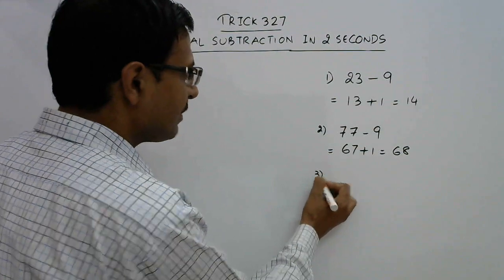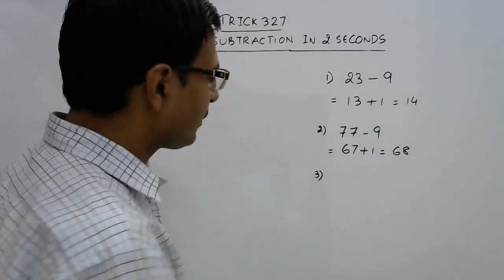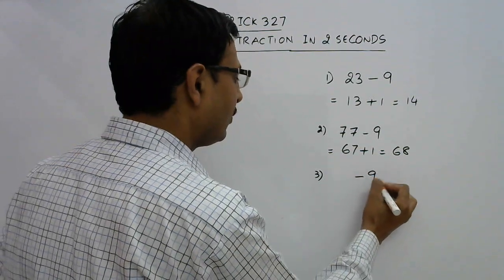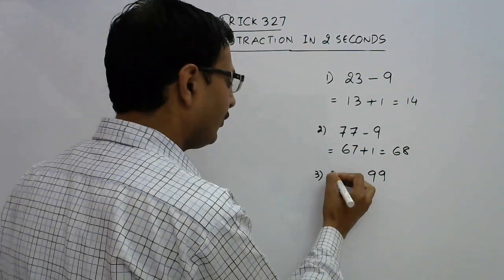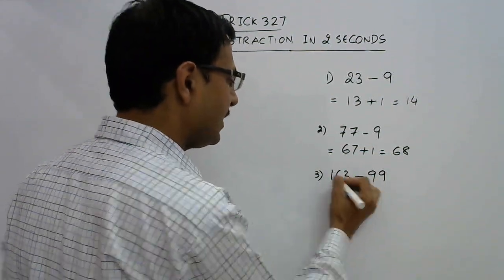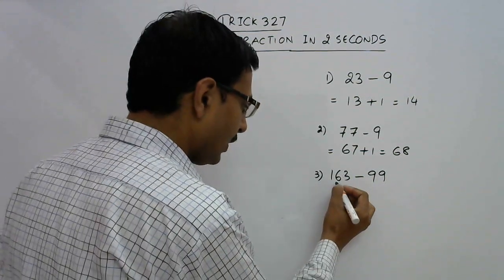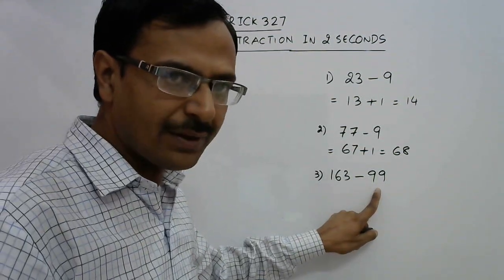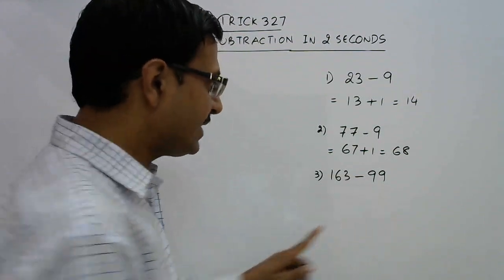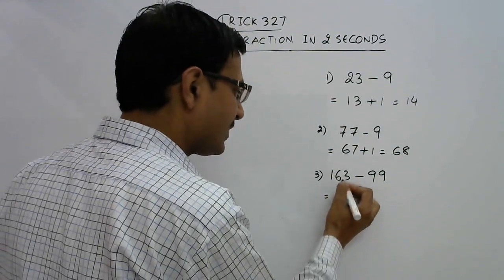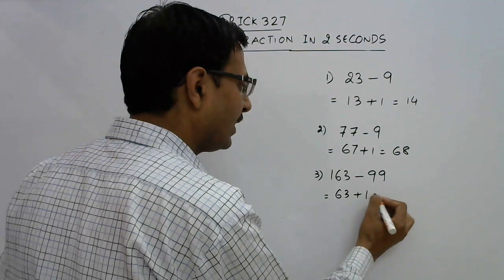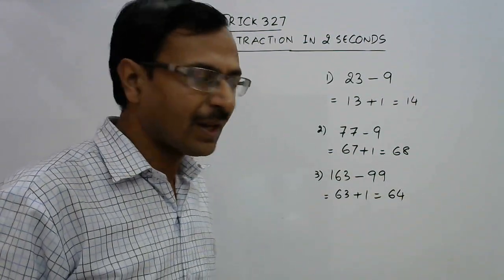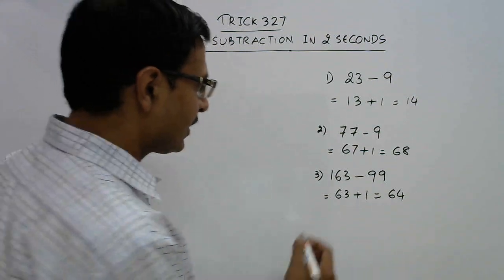Now let us change the base quantity. Suppose we need to subtract 99 from 163. Now 99 is close to 100, so don't subtract 99 — subtract 100. So this becomes 63, and just add 1, you get the answer as 64. Let us change the base further.